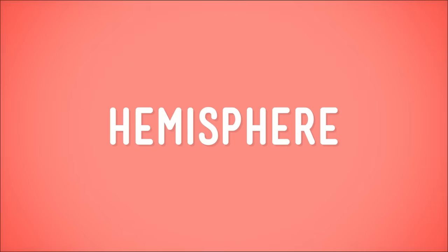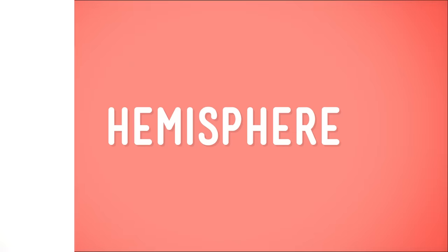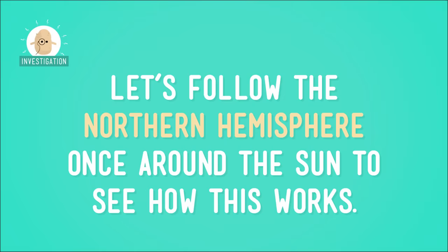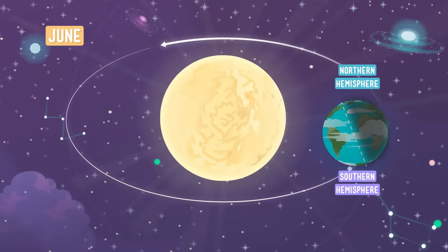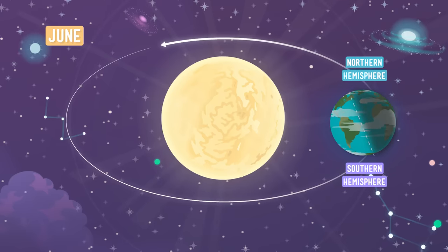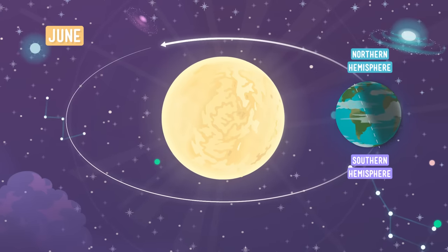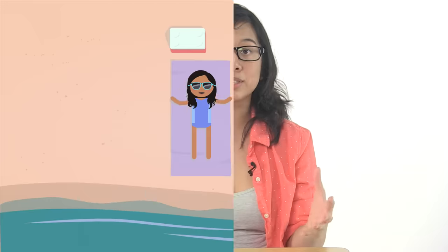Since the Earth is tilted, for part of the year one of the hemispheres — which is half of the Earth — is leaning toward the sun, and the other part of the year it's leaning away. Let's follow the northern hemisphere once around the sun to see how this works. In June, the northern hemisphere is tilted towards the sun, meaning it's getting a lot of direct sunlight — light that's hitting it straight on. If you've ever sat directly underneath a bulb, you know that things can get pretty hot. And that's exactly what's happening to the northern hemisphere.